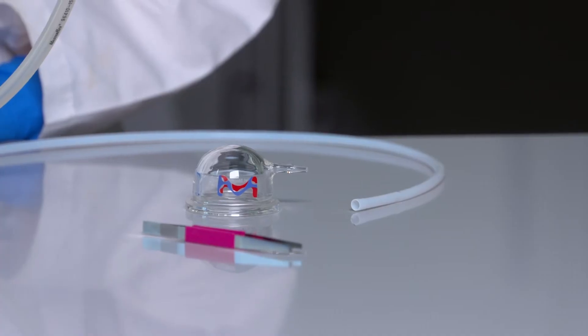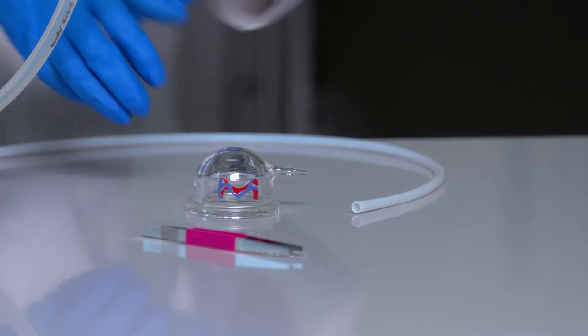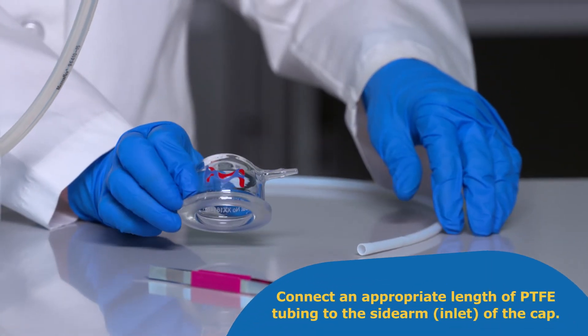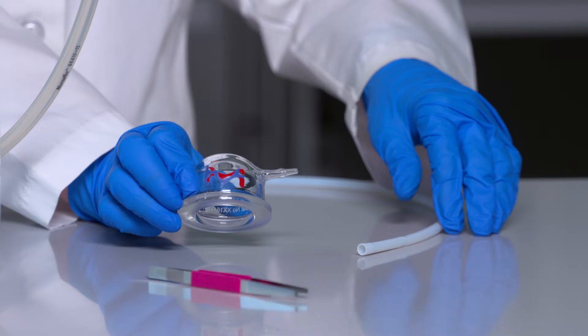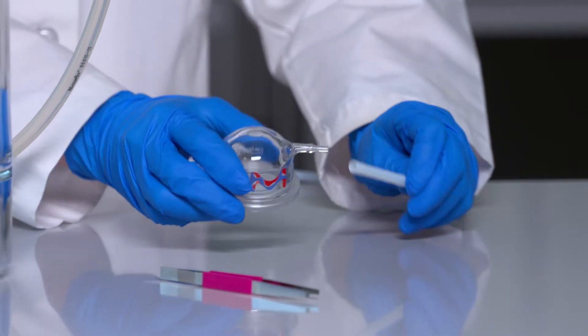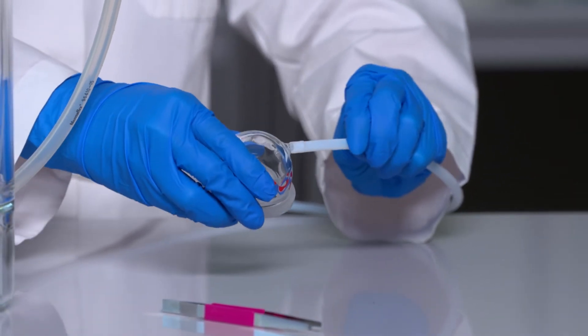For continuous filtration using the vacuum cap, connect an appropriate length of PTFE tubing to the sidearm or inlet of the cap. Using the shortest length of tubing possible between the solvent container and the vacuum cap, slowly push the tubing over the sidearm of the cap.